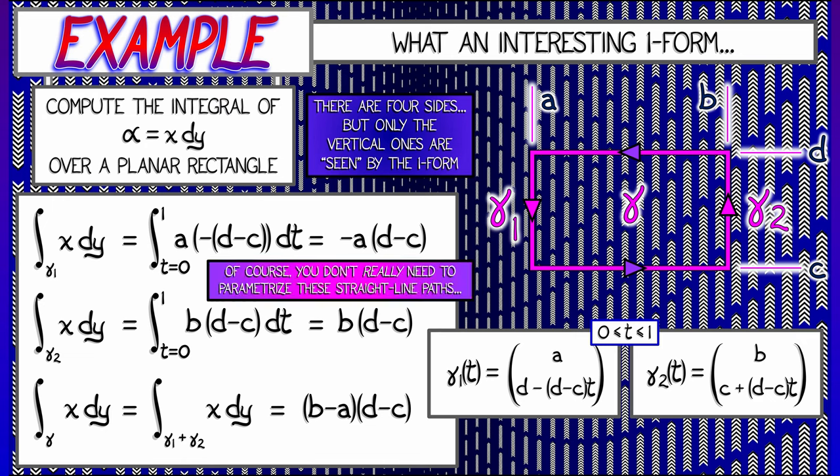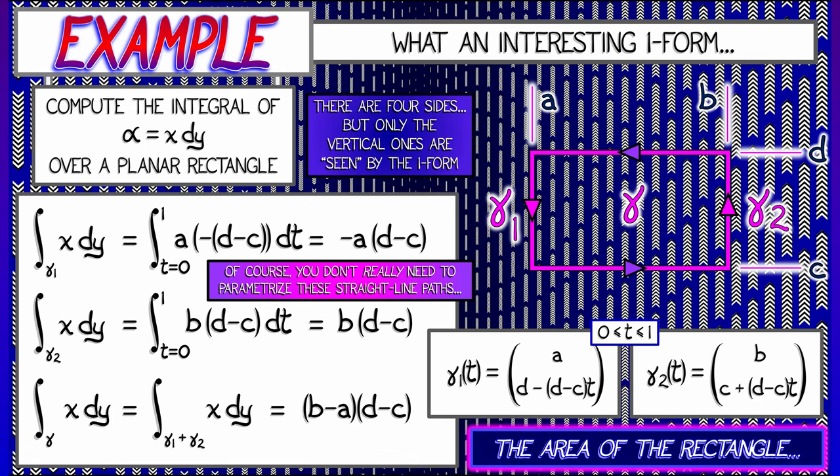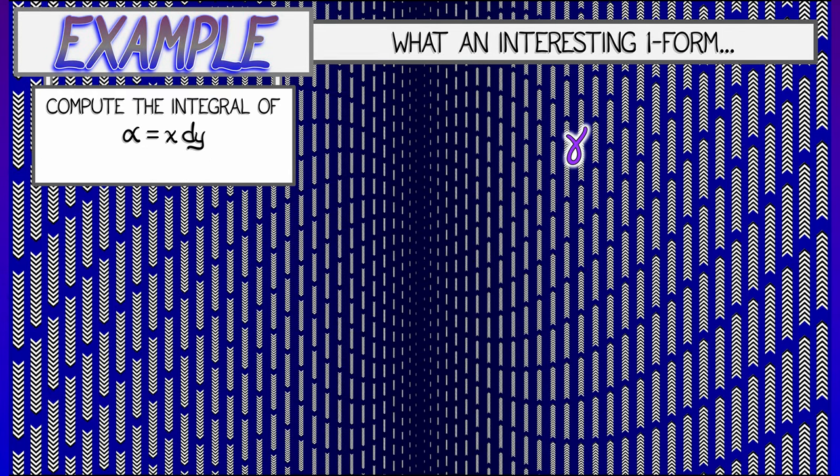Now, of course, we really didn't need to do all that to parameterize these straight line paths. Look, it's just dy, the change in y, times x, which is a constant along these two paths. So we could have saved ourselves a little bit of time there, but here we go. That's it. We've got the result. And notice that this is really the area of that rectangle. What an interesting one form. Hmm. I wonder what happens if we change things up a bit. Let's say, instead of integrating over a rectangular path, we integrate over a circular path.